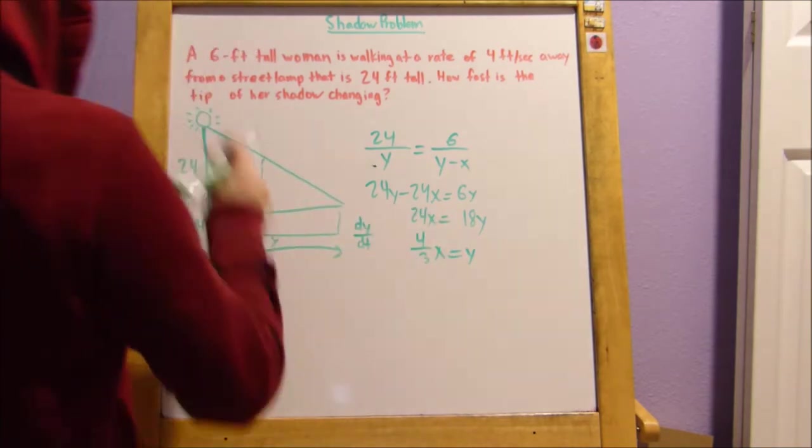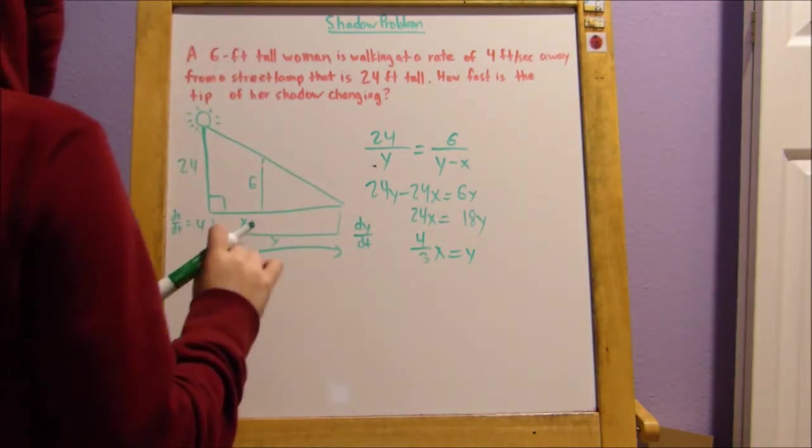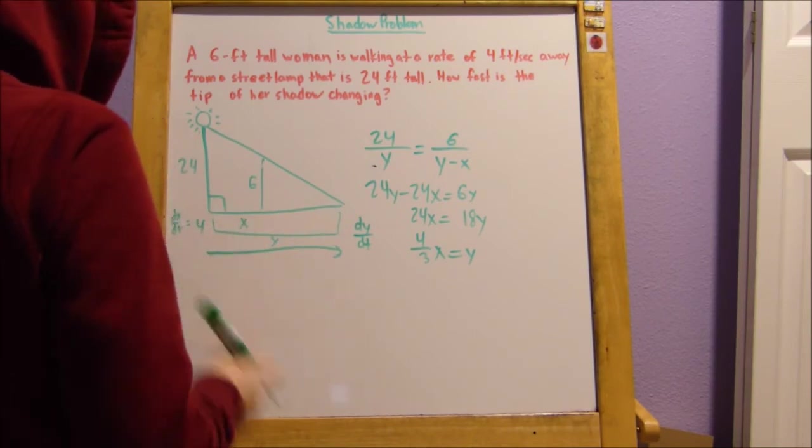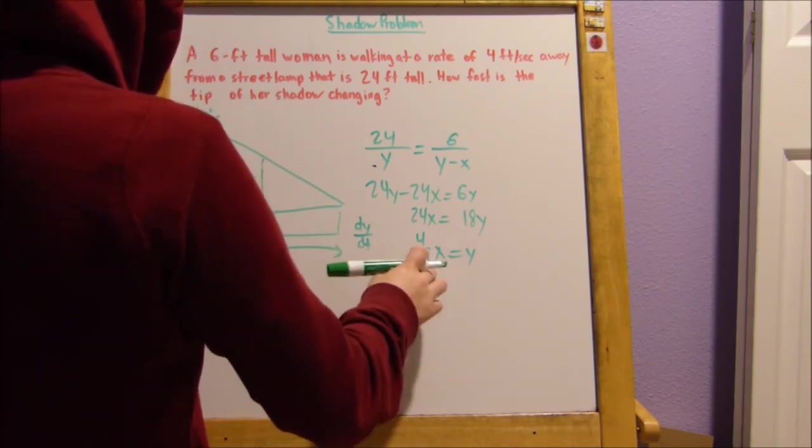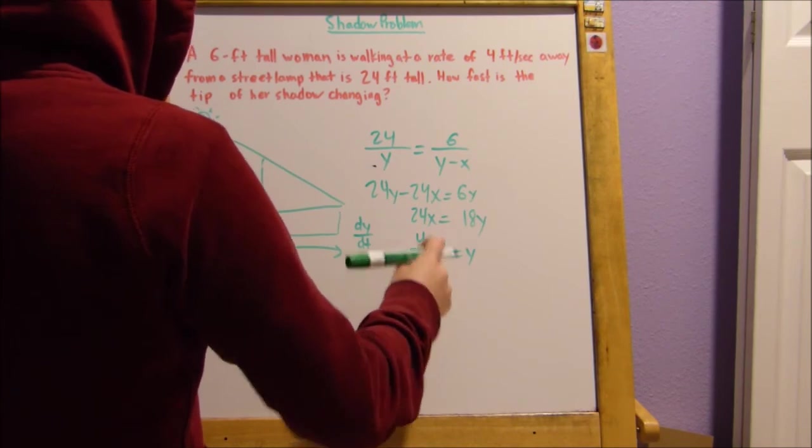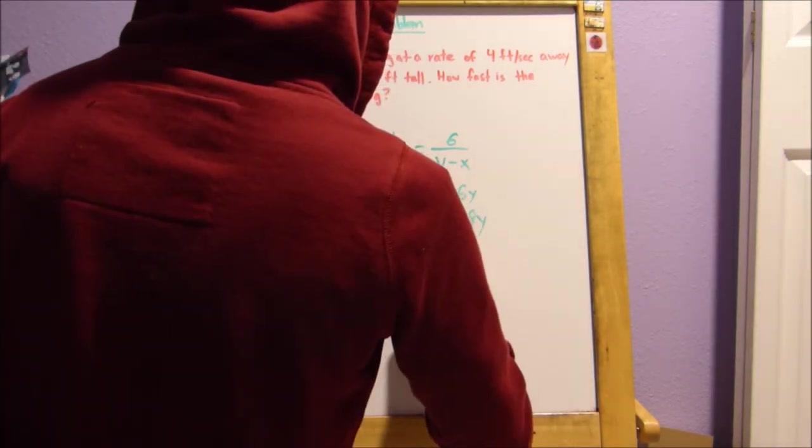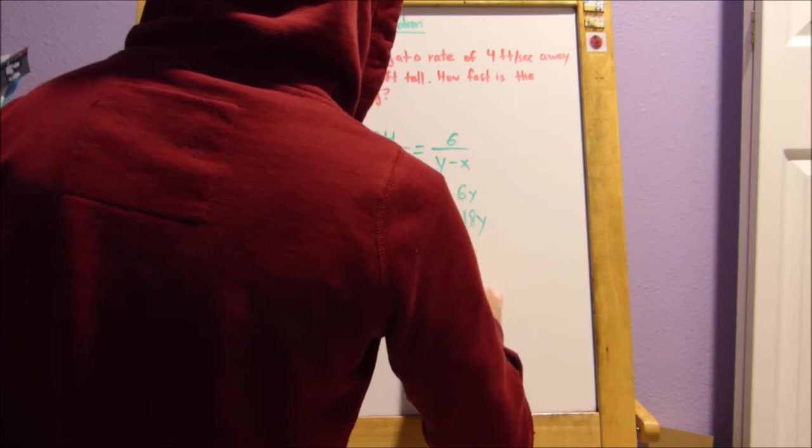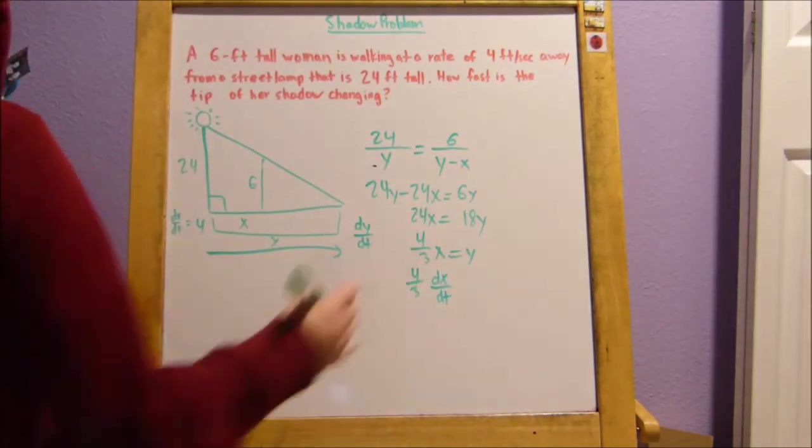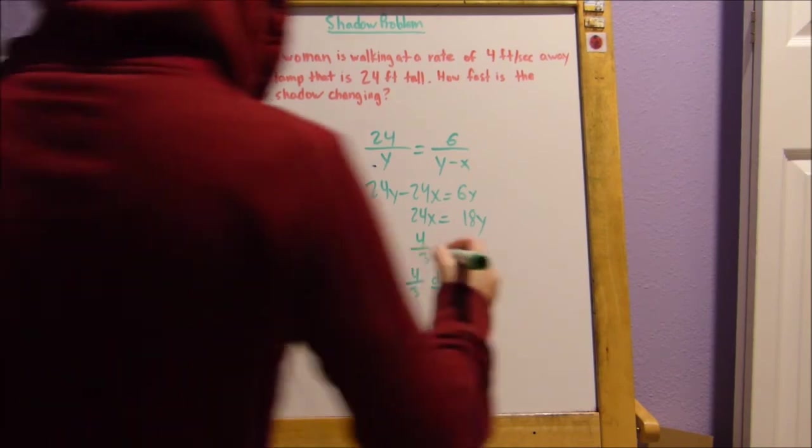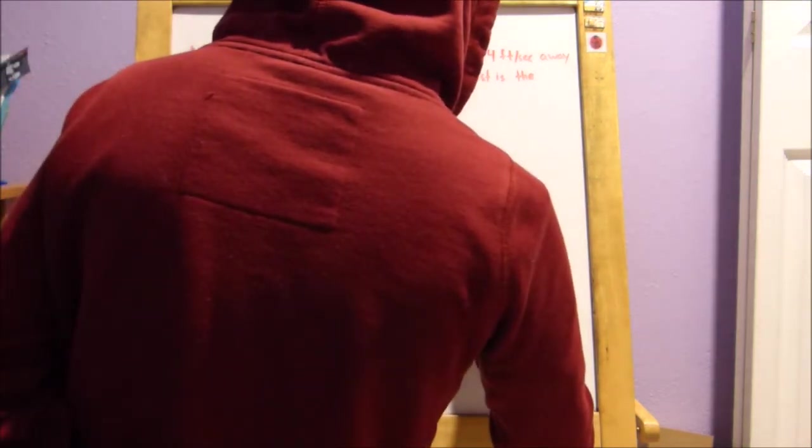And then, since this is a related rates problem, what we're going to do is we're going to take the derivative of it. Rates, derivatives, that's the way it works. So, the derivative of 4 thirds x is just going to be 4 thirds dx over dt. You've got to remember this, though, because it's in respect to time. And this is going to be dy over dt.